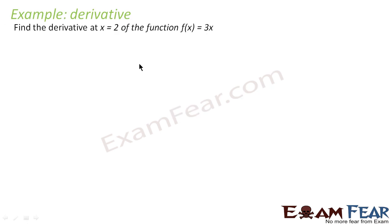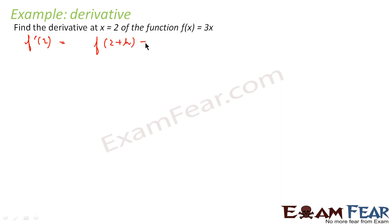Here we have to find the derivative of f(x) where f(x) is equal to 3x and x is equal to 2. So let me say f' of 2 — we can use the formula. This is nothing but the limit of f(2+h) minus f(2) by h, as h tends to 0.